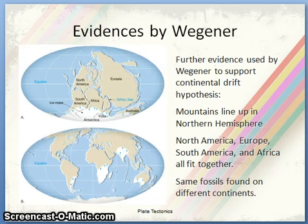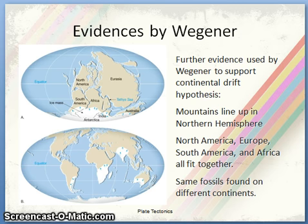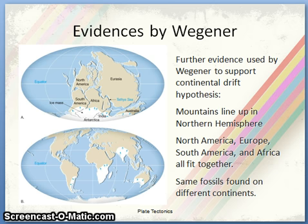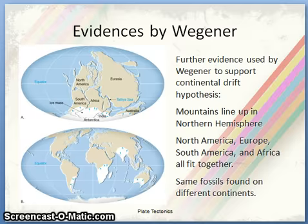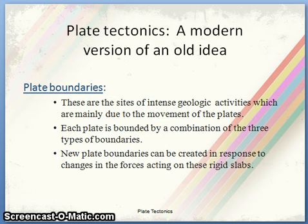Further evidence used by Wegener to support the continental drift hypothesis includes mountain ranges that line up across the northern hemisphere — North America, Europe, South America, and Africa all fit together. This jigsaw-fit hypothesis also supports Wegener's theory. Some fossils found on different continents and geological aspects further support the concept.